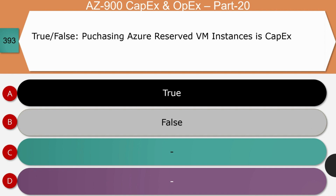True or false: Purchasing Azure Reserved Virtual Machine Instances is a CapEx. The right answer is true. A reserved instance is where you buy an instance upfront by paying a large amount of money, either for one or three years. This saves money as you receive a discount on the VM cost. However, since this is an upfront payment with significant value, it is classified as CapEx and not OpEx.